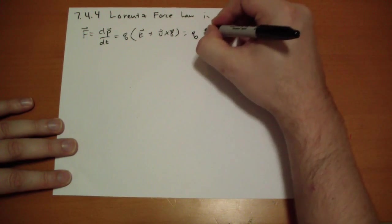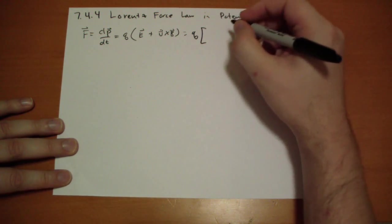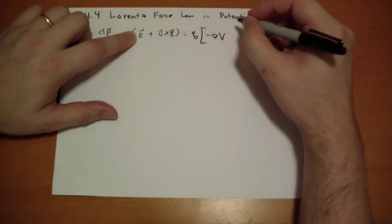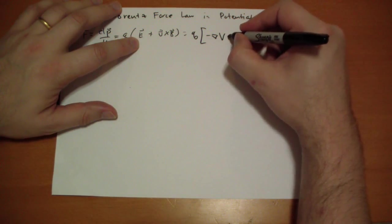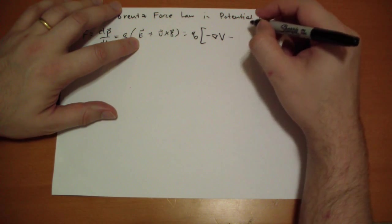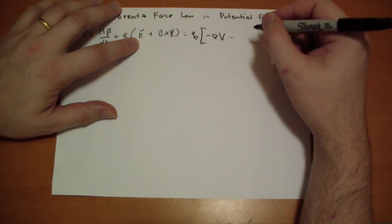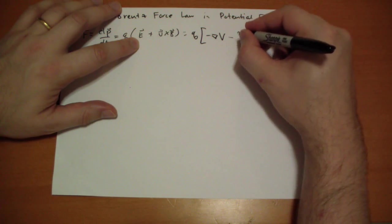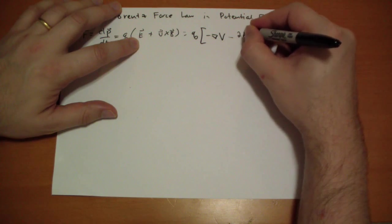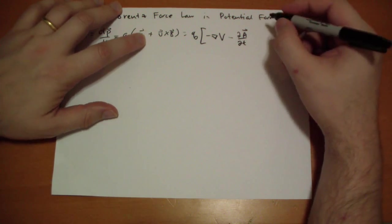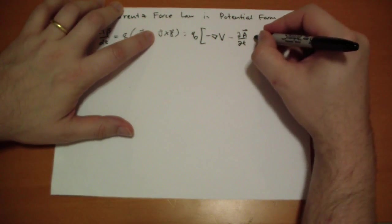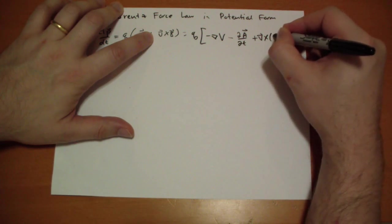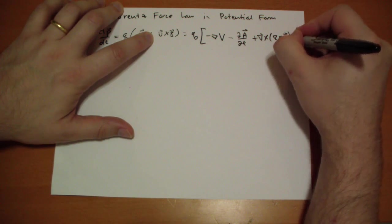That's just equal to Q times: E is negative grad V minus the time derivative of A vector, and then plus V cross the curl of A vector.